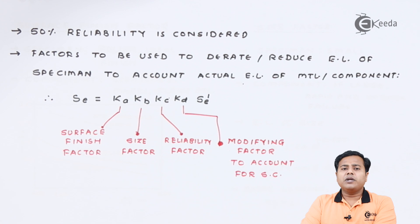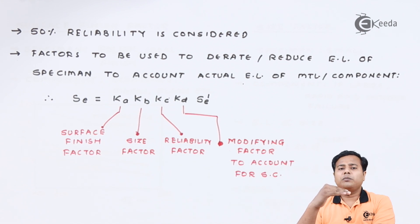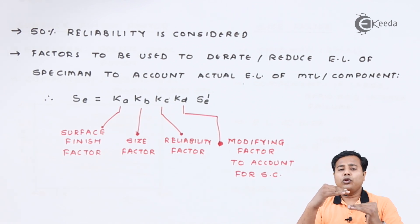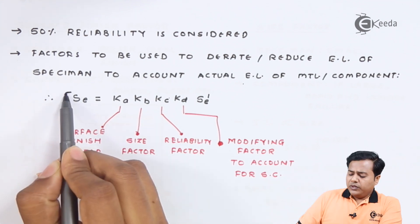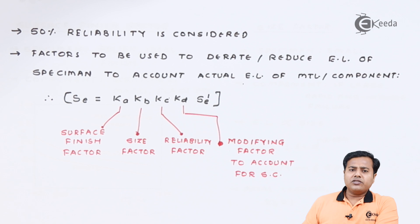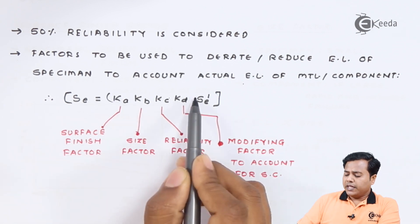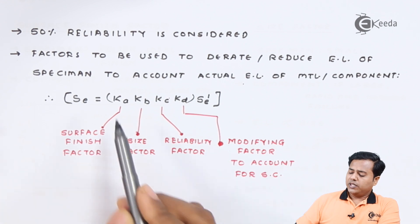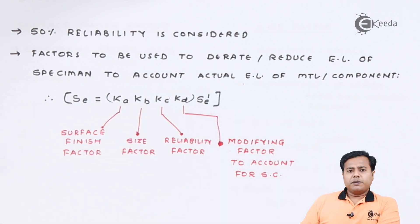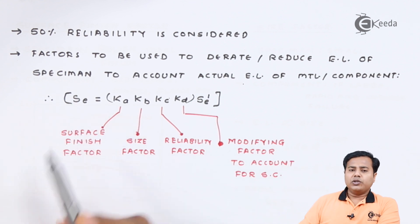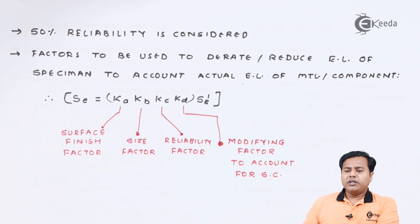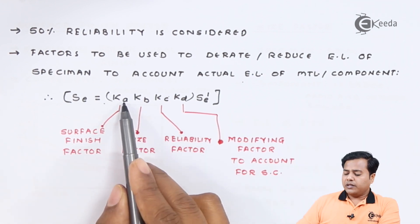It is always about comparing the component and the specimen. The specimen gives a higher, ideal value, but due to the complexities present in the actual component that limit comes down, and we must consider the lower limit for actual design. The empirical relation is a straightforward equation: the product of n number of factors multiplied by the specimen endurance limit gives you the actual endurance limit of the component.